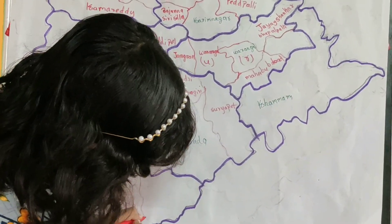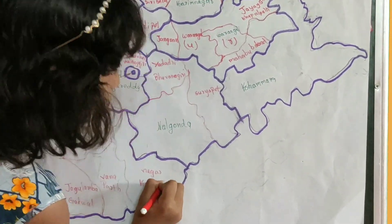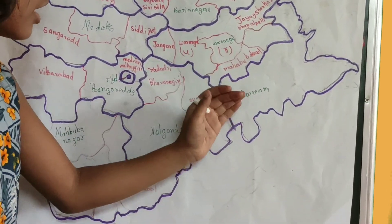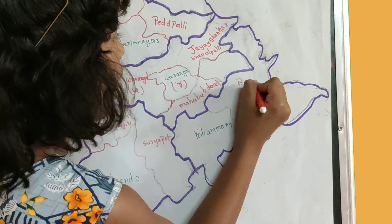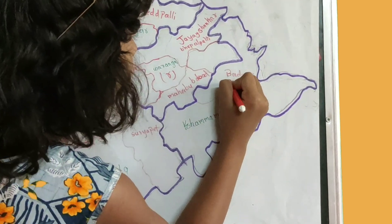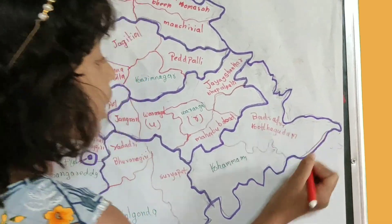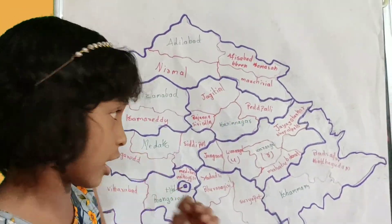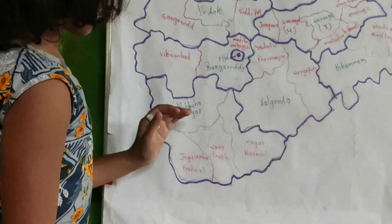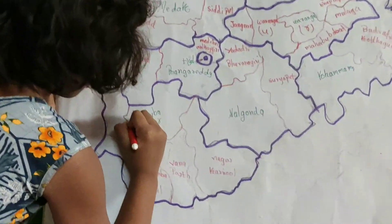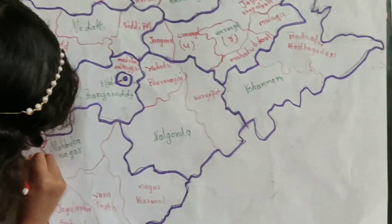Then Narayanpet. Khammam district is divided into two districts: Khammam and Bhadradri Kothagudem. Again, Jayashankar Bhupalpalli district is divided into two districts: Jayashankar Bhupalpalli and Mulugu. Again, Mahabubnagar district is divided into two districts: Mahabubnagar and Narayanpet.